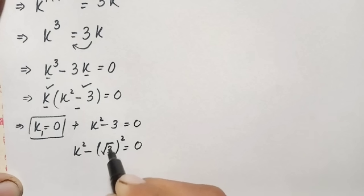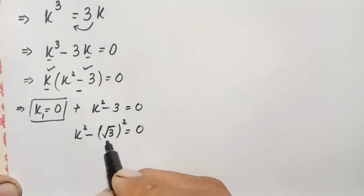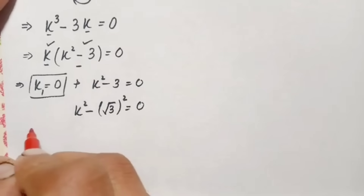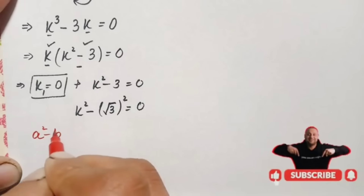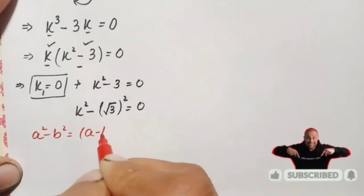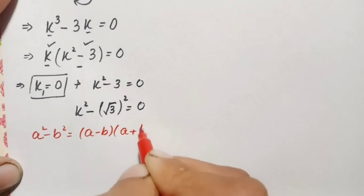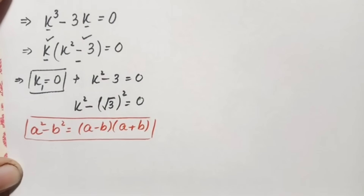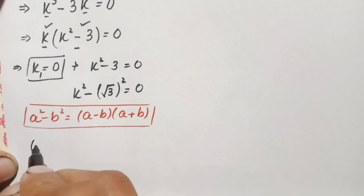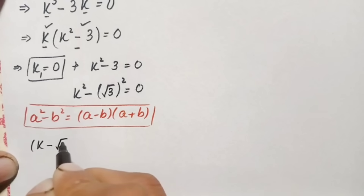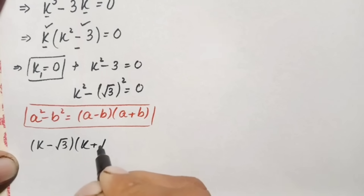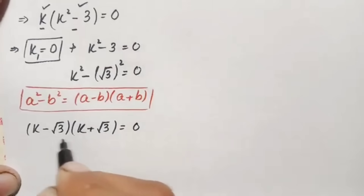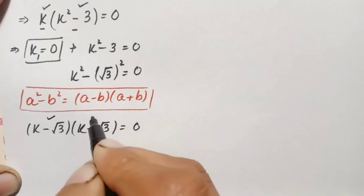We rewrite 3 as (√3)², so the equation becomes k² minus (√3)² equals zero, since the square and square root cancel to give 3. On the left hand side, we apply the algebraic identity a² minus b² equals (a minus b)(a plus b), where a is k and b is √3.